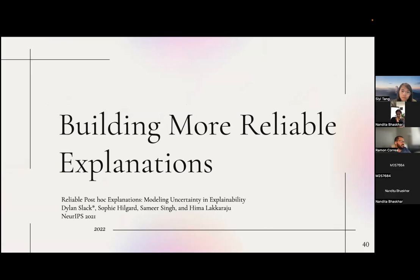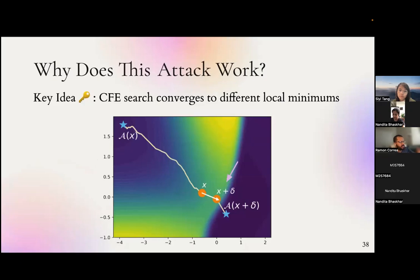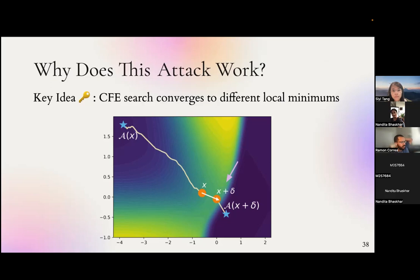At the midpoint break, a question: using perturbations, you're not changing the final model classifications — only the explanations, correct? Yes. The intuition is there's this backdoor: adding the perturbation leads to the loan being predicted, but the path shown to a certain group is much, much easier.